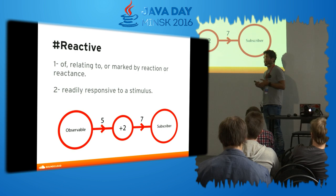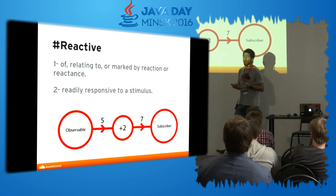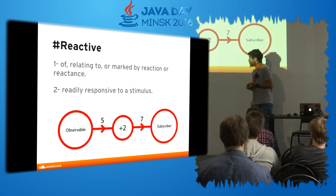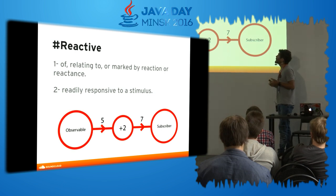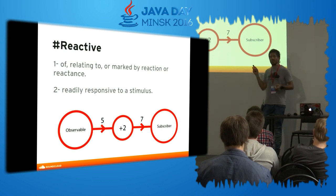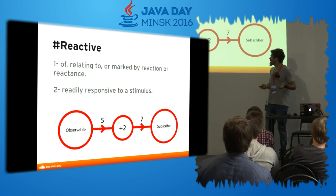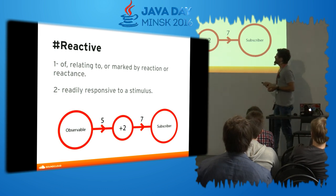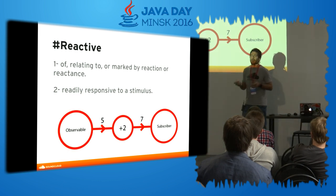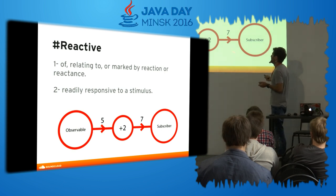I usually like to start by saying what reactive is, because many people don't know — like why the name reactive programming, why RxJava? Reactive is something that is responsive to a stimulus. It's related to or marked by reaction or reactance. By the end of this talk you should know what is this and what's happening here.